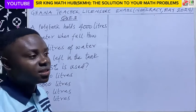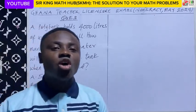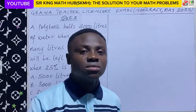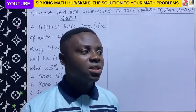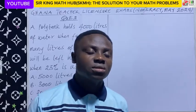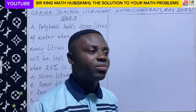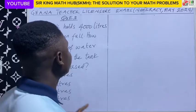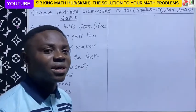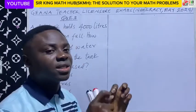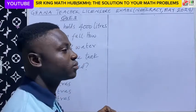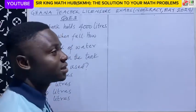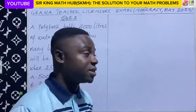Now, we know that in percentages, the original quantity is always taken as 100%. In this particular question, the original quantity is the capacity of the polytank when it is full. So the capacity of the polytank when full — 4,000 litres — must correspond to 100%.